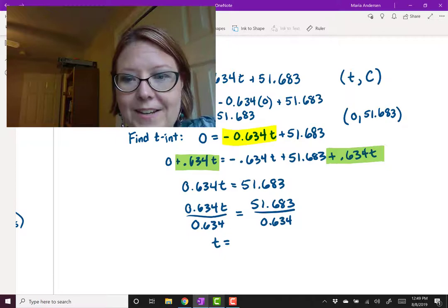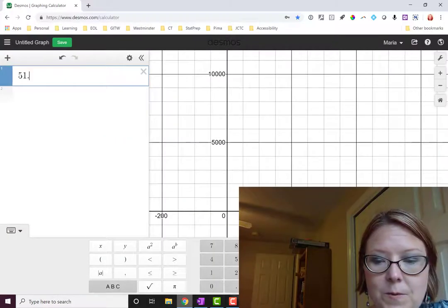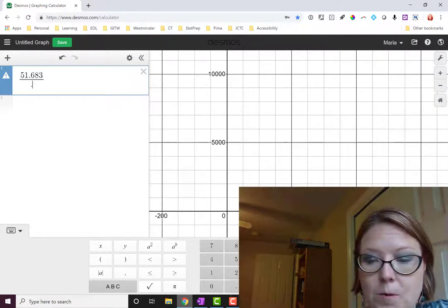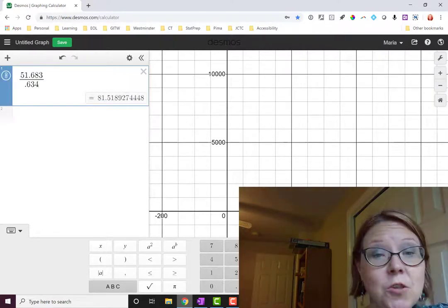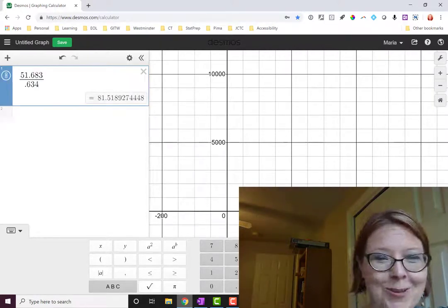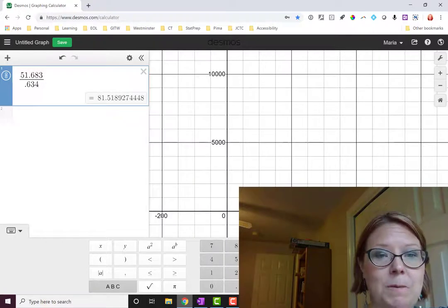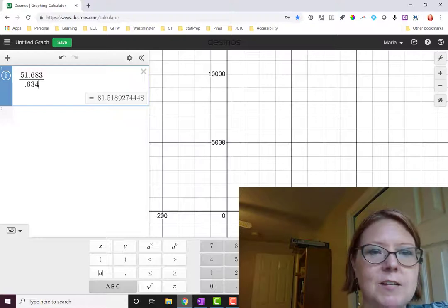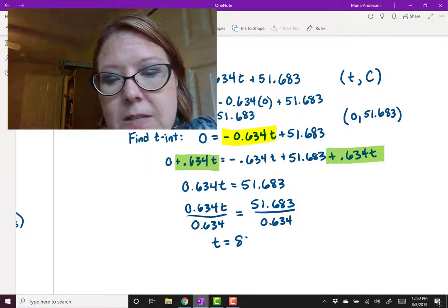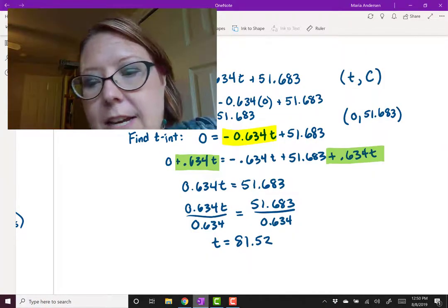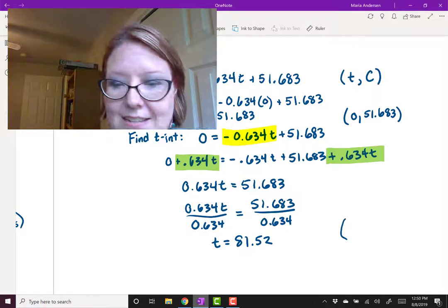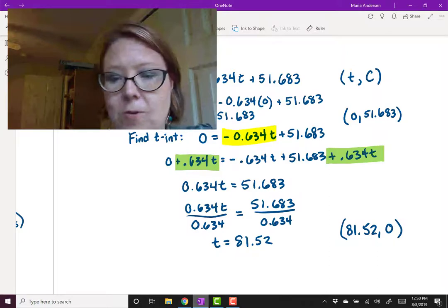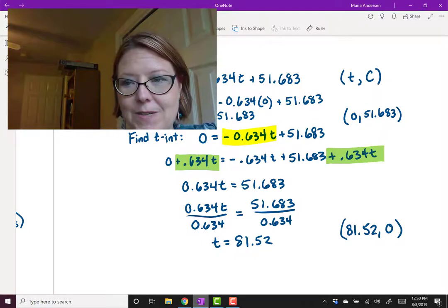My last step is to divide both sides by 0.634. On the left we simplify to t, and on the right we need to do a quick calculation: 51.683 ÷ 0.634. Notice you can use Desmos to do simple calculations. You'll see the result appear in a box. Let's round it to 81.52. So t = 81.52, and the point is (81.52, 0) because we plugged 0 in for C.